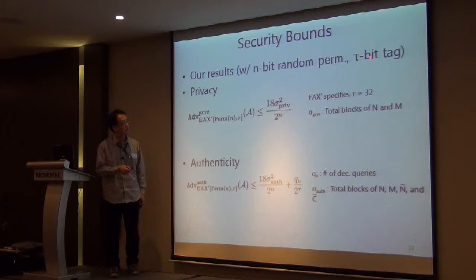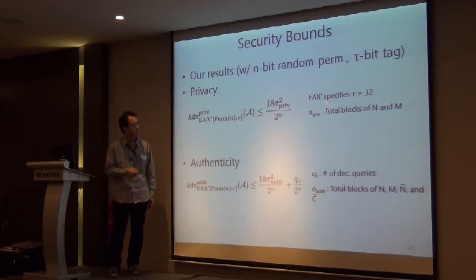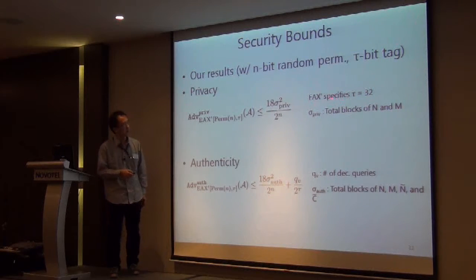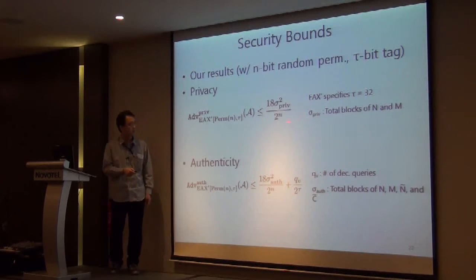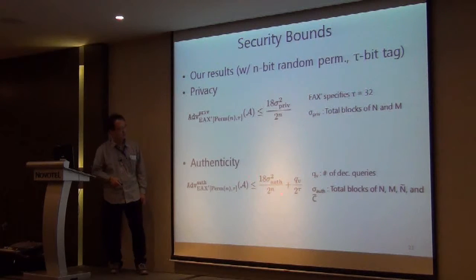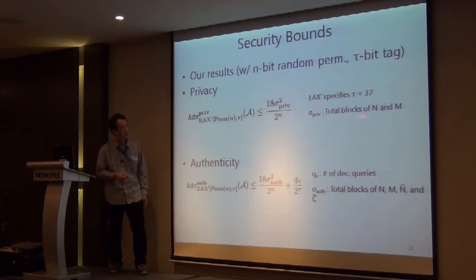The results show that we obtained security bounds considering the maximum advantage of the adversary, assuming the internal block cipher is a random permutation. The final tag truncation is parameterized by tau, so the tag is tau bits. EAX prime with parameter tau becomes a substitute. These bounds are quite standard-looking, expressed with respect to the amount of queries used by the adversary and the block size.